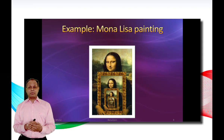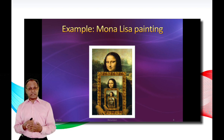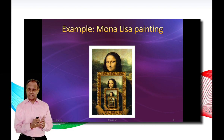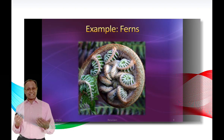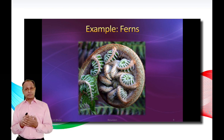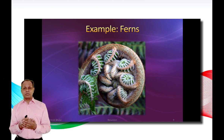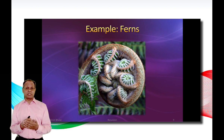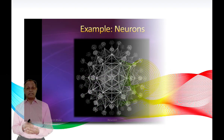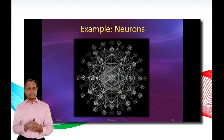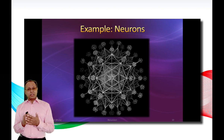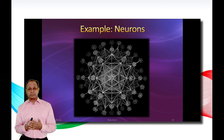Here is another example of recursion. This is a Mona Lisa painting. As you can see, the painting is returning in the painting which is held by Mona Lisa. This is an example of ferns. Ferns are fractals in nature which can be modeled by computers using a recursive algorithm. This is another example of recursion. In this picture we see neurons in our body. You will need a recursive algorithm if you want to model this on computers.